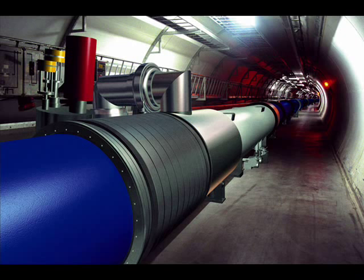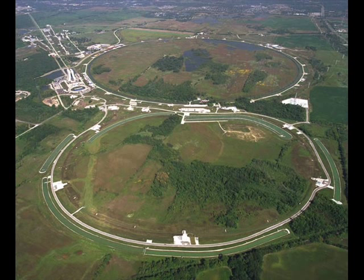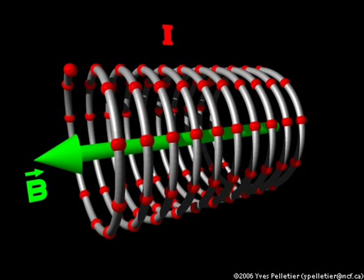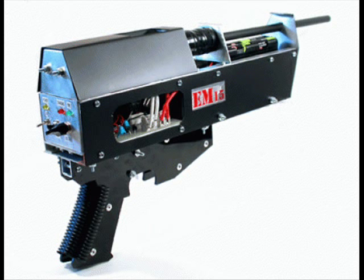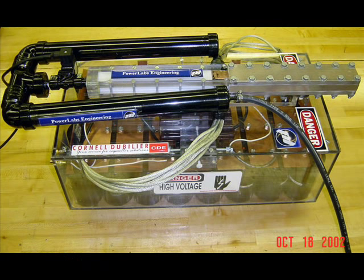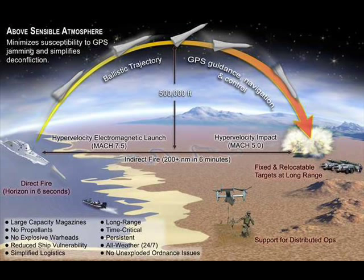Particle accelerators have started to make their way into modern day life, from CERN's — the European Organization for Nuclear Research particle accelerator — to the cathode ray tube, or CRT TV. In principle, a particle accelerator uses electromagnetic fields to accelerate a projectile to mind-boggling speeds. In this video, we will be looking at two forms of particle accelerators: the coil gun and the rail gun. Both have the same objective — to fire a projectile using only electricity.